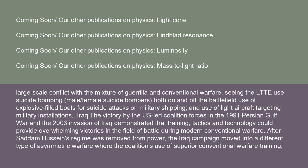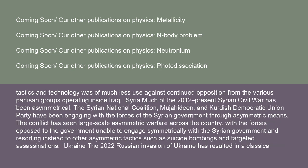The U.S.-led coalition's victories in the 1991 Persian Gulf War and the 2003 invasion of Iraq demonstrated that training, tactics, and technology could provide overwhelming victories in conventional warfare. After Saddam Hussein's regime was removed, the Iraq campaign moved into asymmetric warfare where the coalition's superior conventional capabilities were of much less use against various partisan groups. Much of the 2012-present Syrian Civil War has also been asymmetric, with the Syrian National Coalition, Mujahideen, and Kurdish Democratic Union Party engaging government forces through suicide bombings and targeted assassinations.